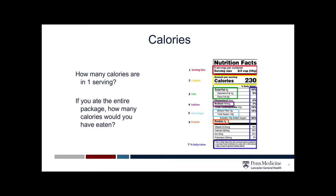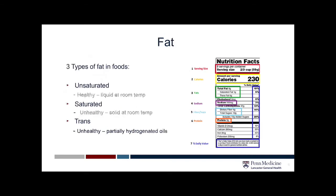The next thing I want to speak about is the amount of fat. The fats are all broken down in the green section. There are three types of fats in foods: unsaturated, saturated, and trans fats.